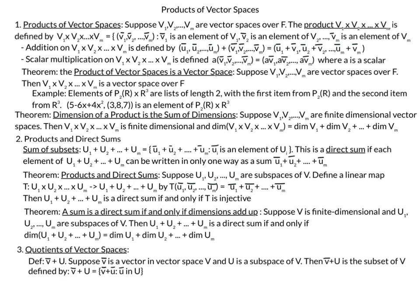Next, we are going to talk about a mapping from the products of vector spaces to direct sums. We'll start with a review of direct sums, which we covered in our video about vector spaces and subspaces, beginning with the definition of the sum of subsets. Suppose we have subsets U1, U2, ..., Um. We define the sum U1 plus U2 up to Um as the set of vectors U1 plus U2 up to Um, where each vector Ui is an element of the subset Ui. A sum of subsets is a direct sum if each element can be written in only one way as such a sum.